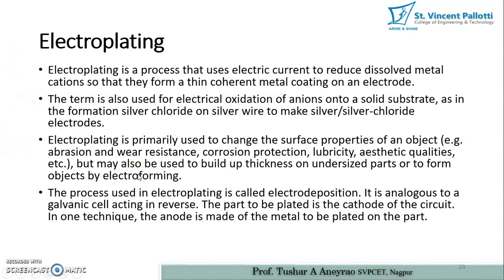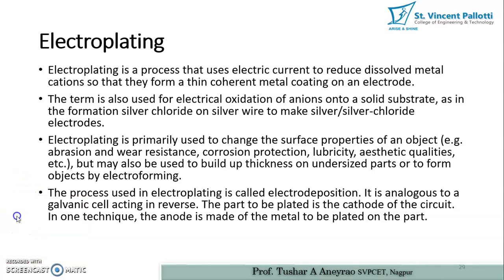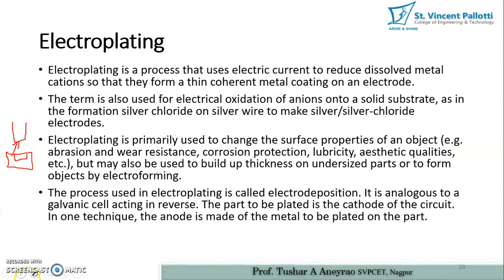Electroforming means using a form tool on the workpiece to perform the operation. For example, one form tool is used on the workpiece on which electroforming is to be performed. Exactly this form of recess will be made using electrolytic operations. We ask the material from the cathode to get deposited on the anode — that is called the electroforming process.